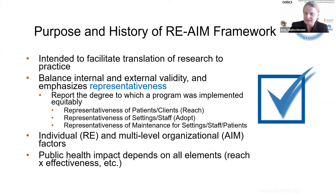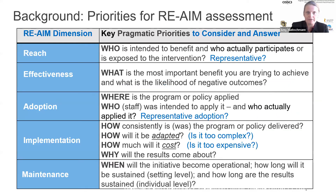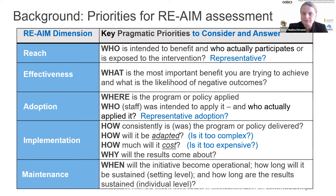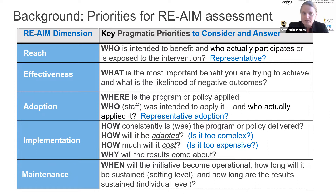I'm going to show a cascade diagram in a bit about that. First, this is just a reminder for each dimension — for any of you we haven't fully influenced to just know these things by heart, just going through them a moment. The RE-AIM dimension of reach: who is intended to benefit and who actually participates. Again, the representativeness. Effectiveness: measuring the most important benefits, and also negative outcomes.